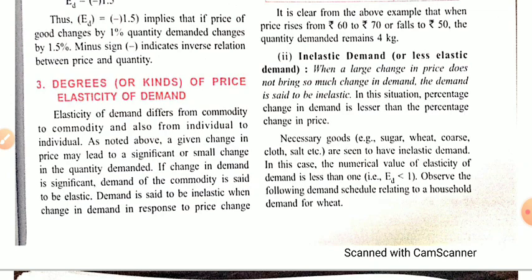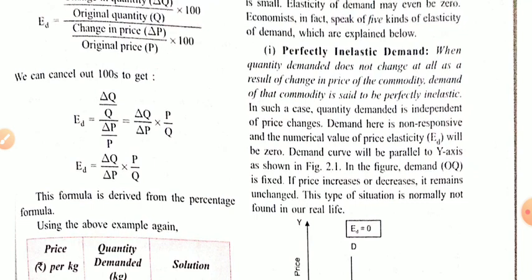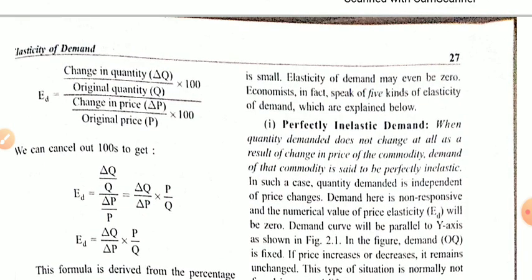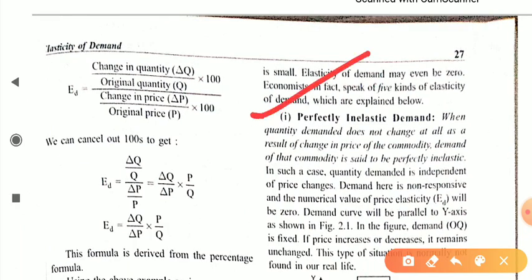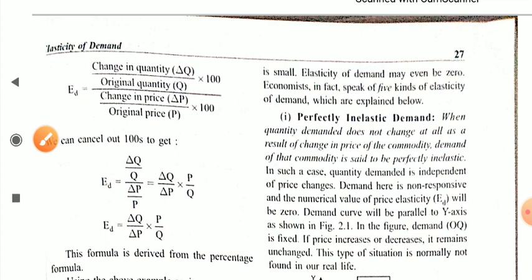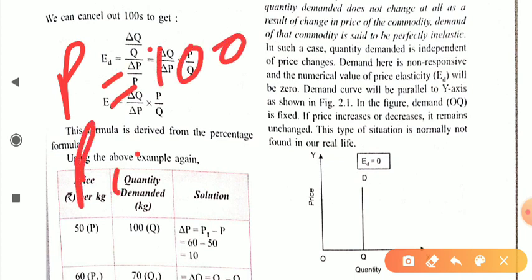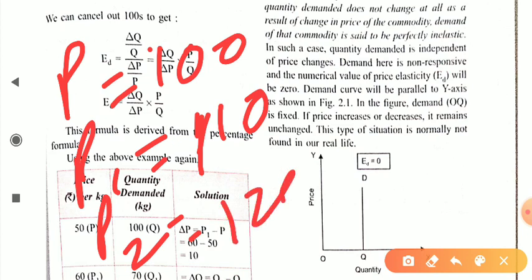There are five degrees of price elasticity of demand. The first is perfectly inelastic demand — when quantity demanded does not change at all as a result of change in price. For example, if price changes from ₹100 to ₹110 to ₹120, but quantity demanded remains constant at 10 in all three cases, this is perfectly inelastic demand. Price changes but quantity remains constant at Q, so elasticity of demand equals zero.